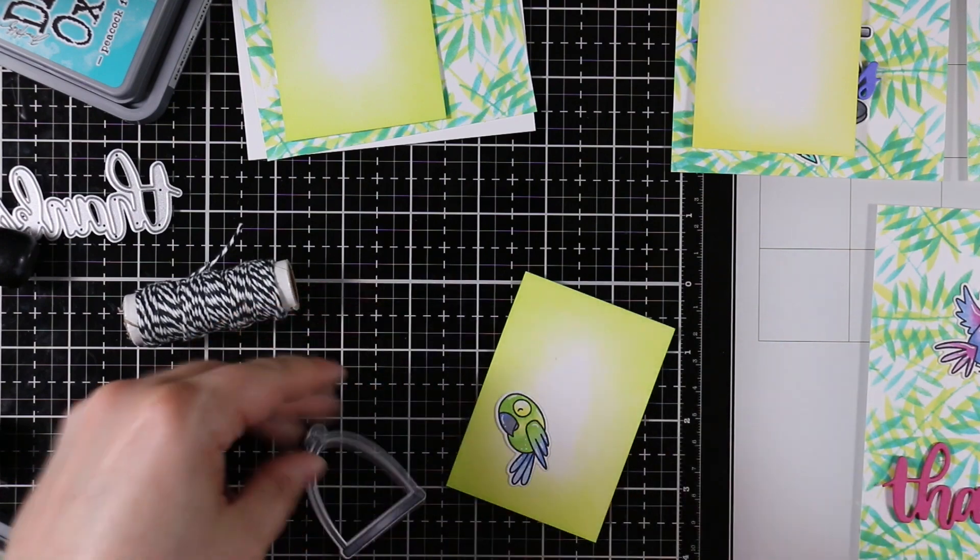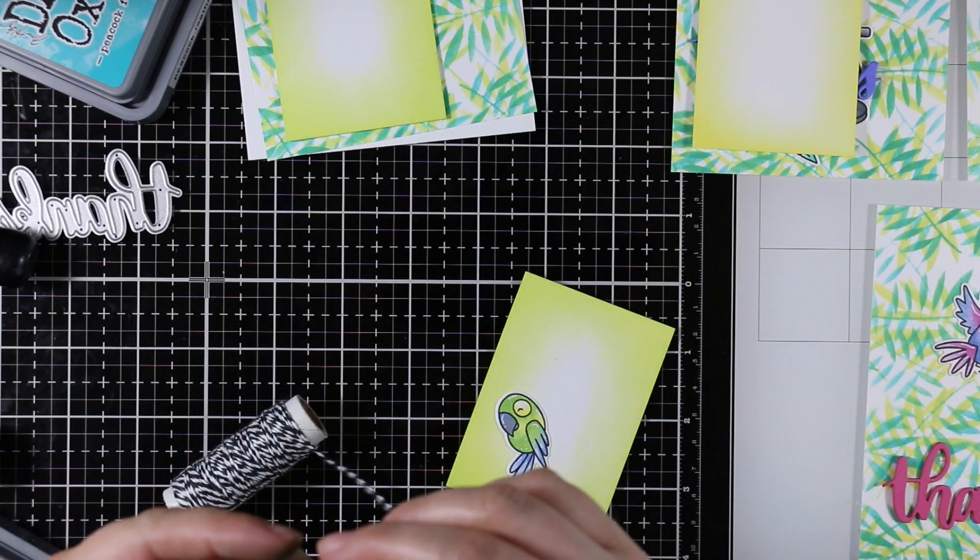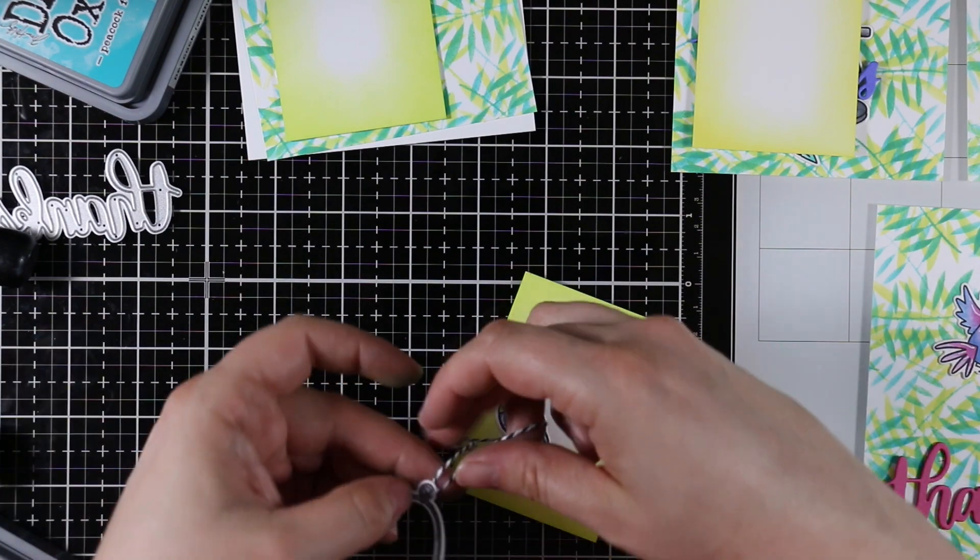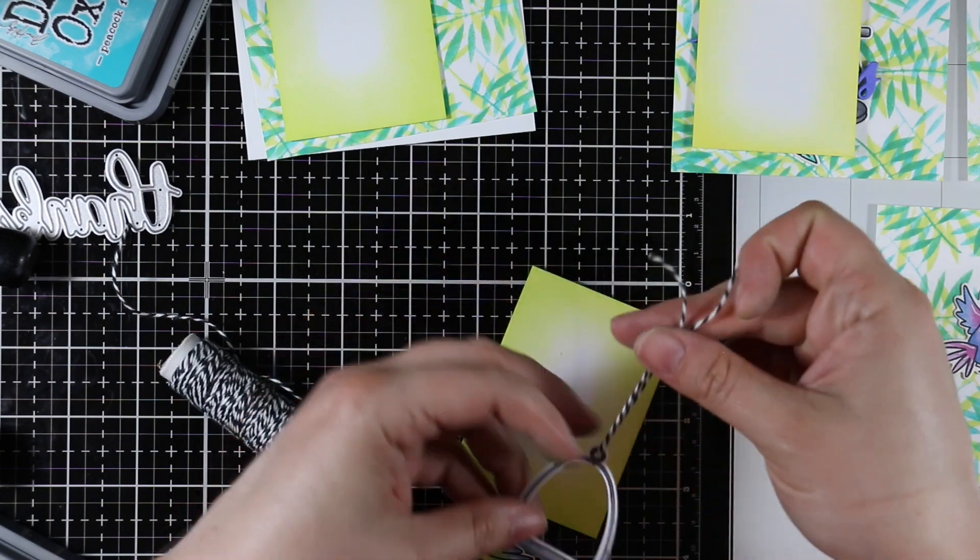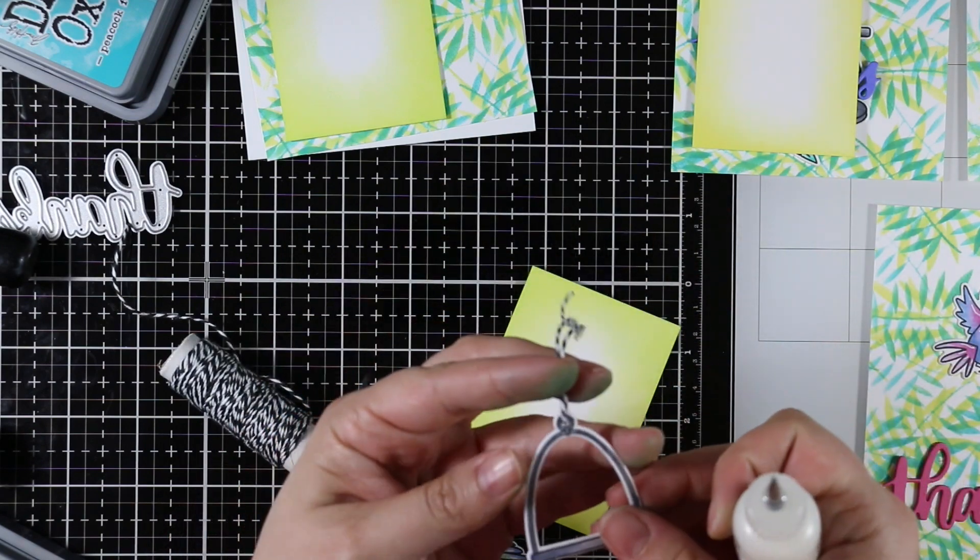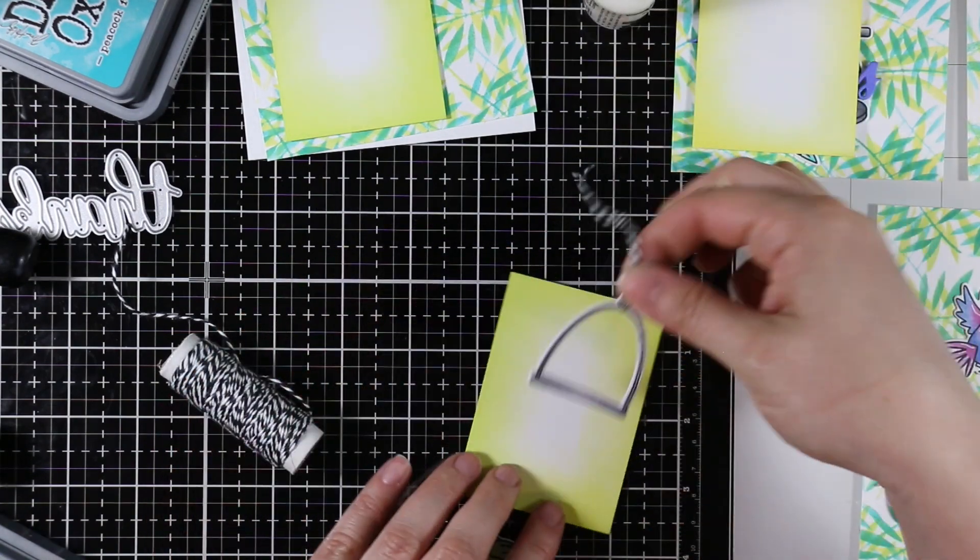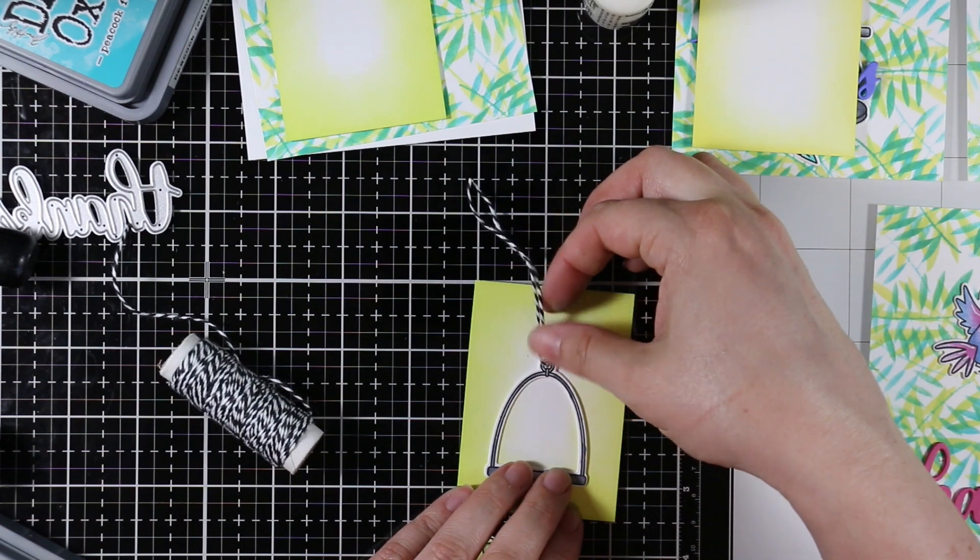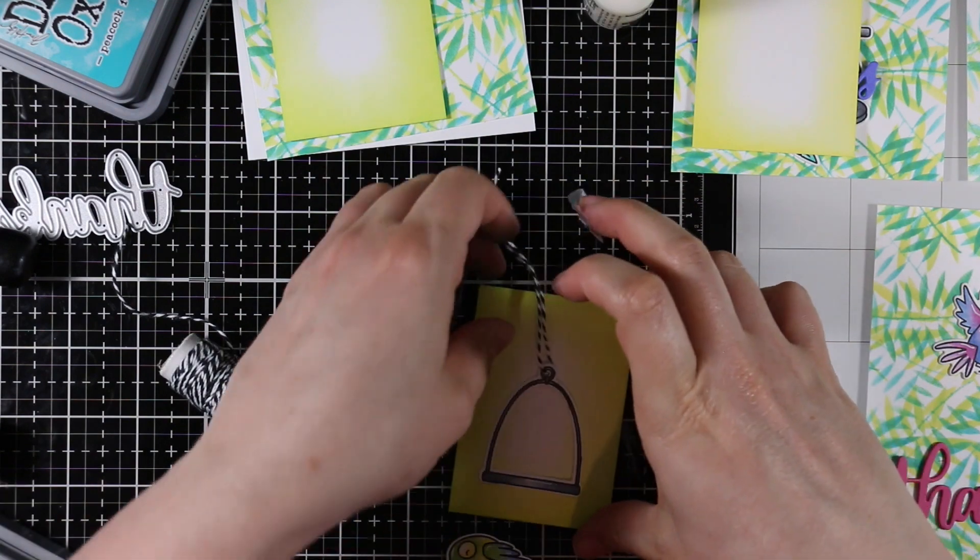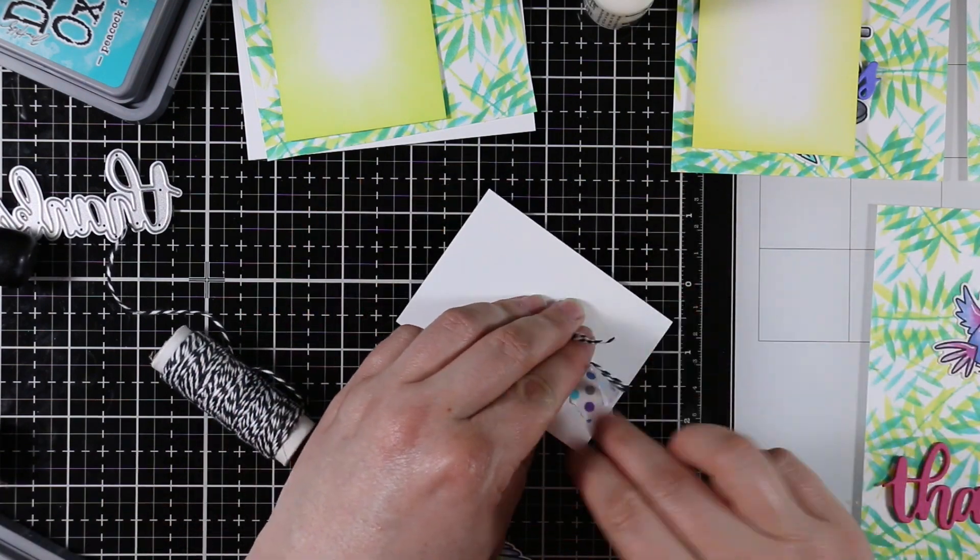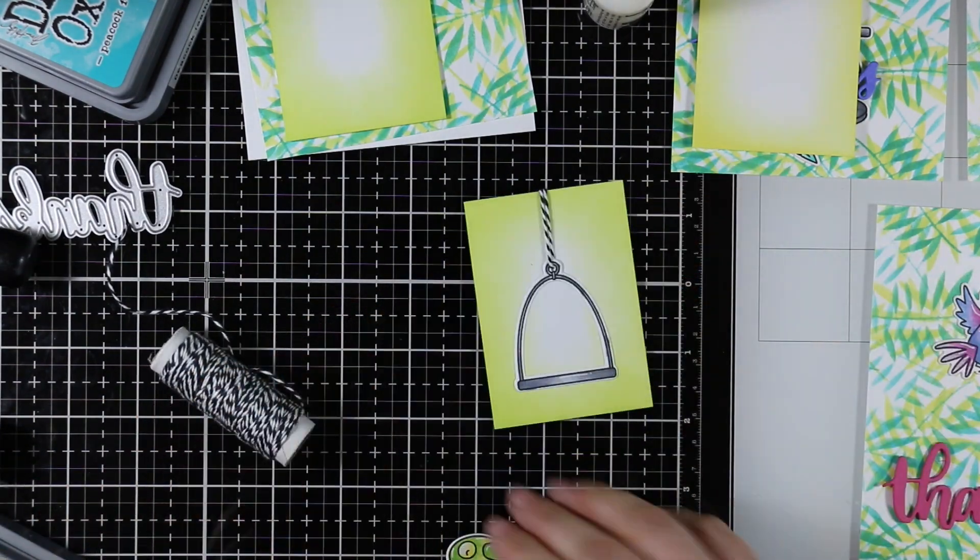For this little bird stand here I took an ancient one-eighth circle punch that I've literally had for 15 years and I punched a little hole there so I could string through some baker's twine. Then I'm going to add my multi-medium matte adhesive to the back of it and then I can adhere that into place and then fold over that twine to the back of this little panel. I just use my washi tape to tape it into place.